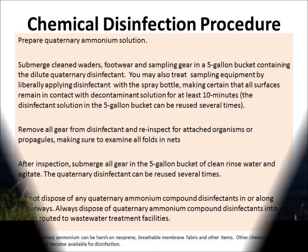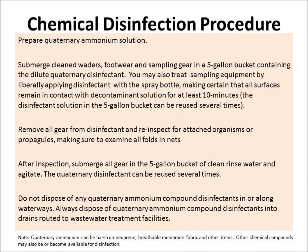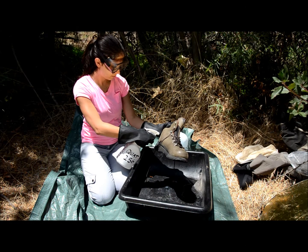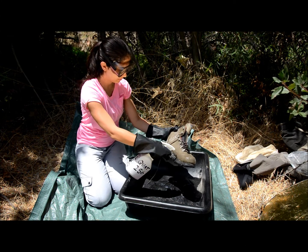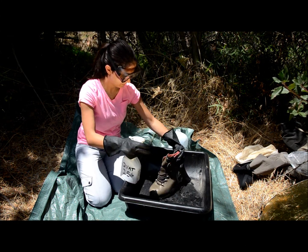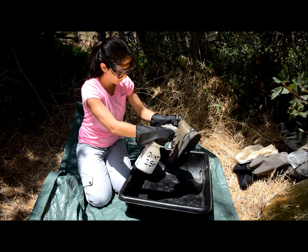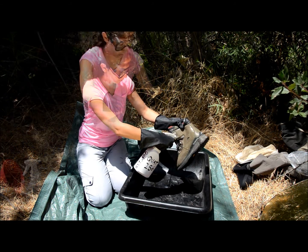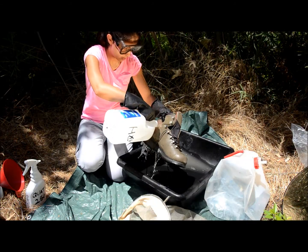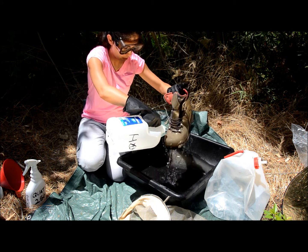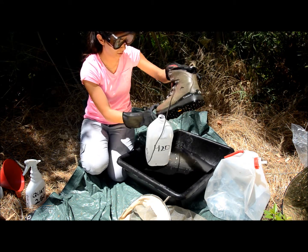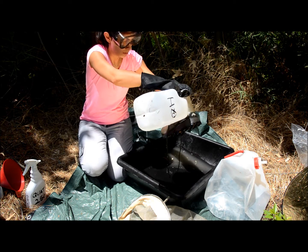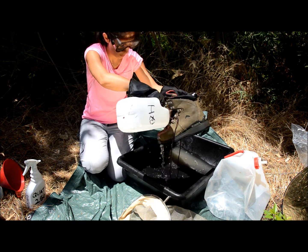We will demonstrate two chemical disinfection procedures. The first is by spraying dilute disinfection solution onto your field equipment and allowing it to remain in contact for at least 10 minutes. After 10 minutes, re-inspect your treated equipment and then thoroughly rinse your equipment before using it again.